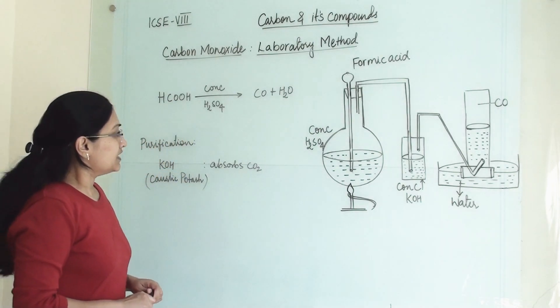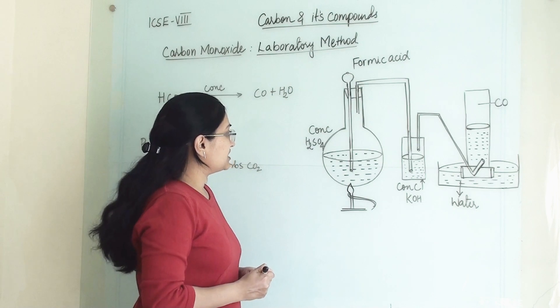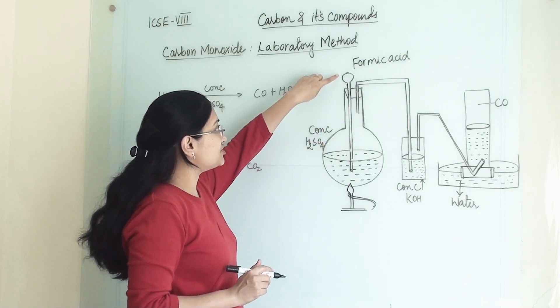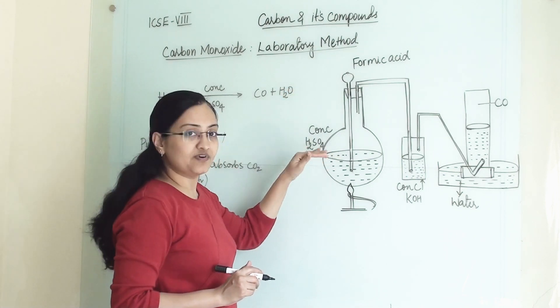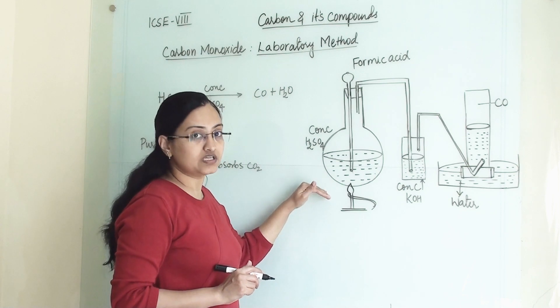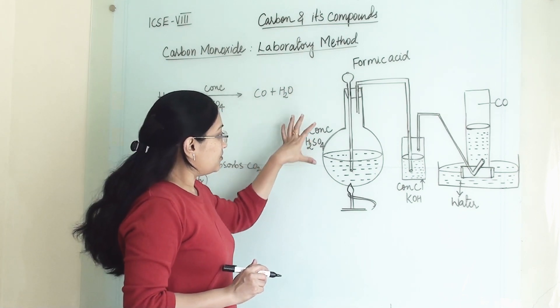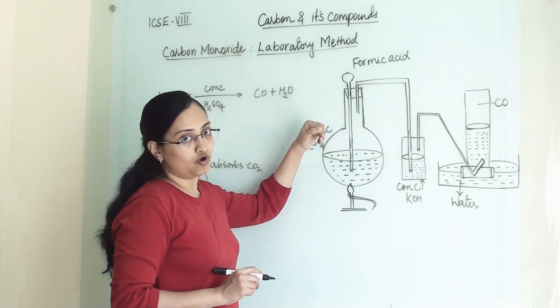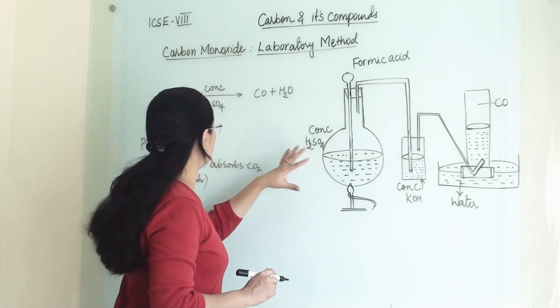So here in round bottom flask we have taken concentrated H2SO4. One thistle funnel is there from which formic acid is drop wise we are adding to concentrated H2SO4 and we have to heat it. So in concentrated H2SO4 drop wise we are adding formic acid. So what will happen?